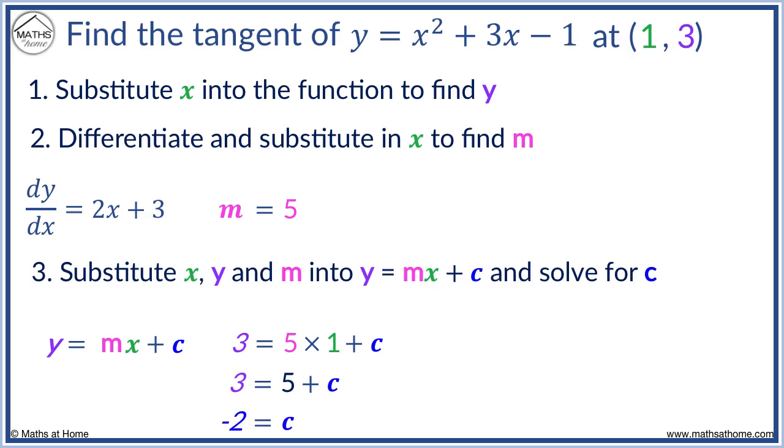The equation of the tangent is found by replacing m and c. m equals 5 and c equals minus 2. We have y equals 5x minus 2.